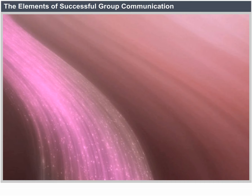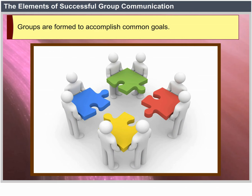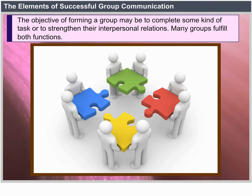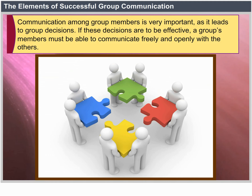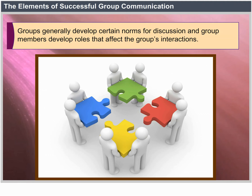The Elements of Successful Group Communication. Groups are formed to accomplish common goals. The objective may be to complete some kind of task or to strengthen interpersonal relations. While groups like families and clubs are predominantly social in their orientation, work groups function to complete a particular task or solve a particular problem. Communication among group members is very important as it leads to group decisions — a group's members must be able to communicate freely and openly. Groups generally develop certain norms for discussion and group members develop roles that affect the group's interactions.